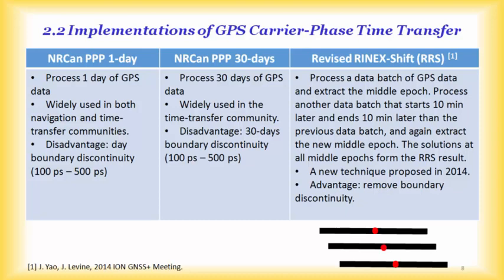To address the day boundary discontinuity, people proposed the NRCAM PVP 30-day (multi-day) method, which processes 30 days of GPS data. However, there are still jumps between consecutive 30-day batches. In 2014, we proposed the Revised Ryaness Shift (RRS) method: it processes a batch of GPS data (e.g., 10 days), extracts the middle epoch, then shifts the window by 10 minutes and repeats. Collecting all these middle points gives the RRS result, which is designed to remove boundary discontinuities.